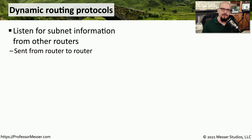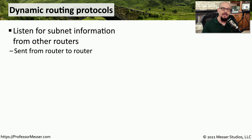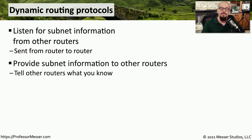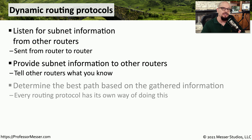The way that most dynamic routing protocols work is that they perform a listening process where they determine what other routers may be located close to them. They'll then build a table within the router, and they'll send their own advertisements out to those routers that are nearby. These advertisements allow routers to work together to build a series of routing tables, and those routing tables are used by the router to determine where traffic should be forwarded.